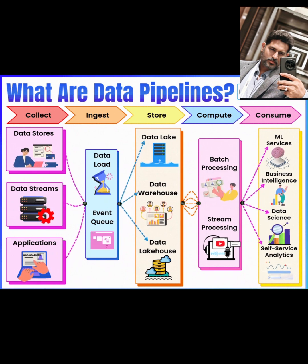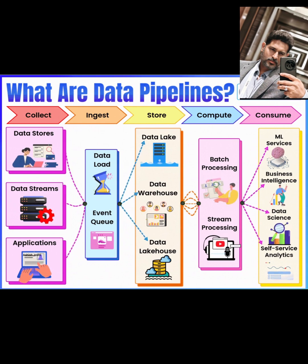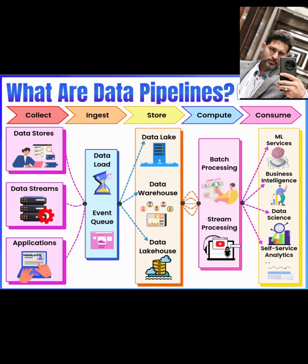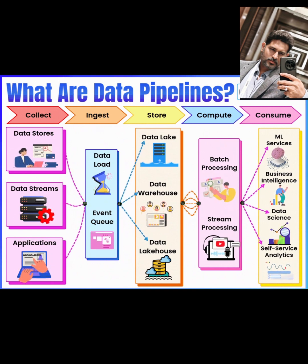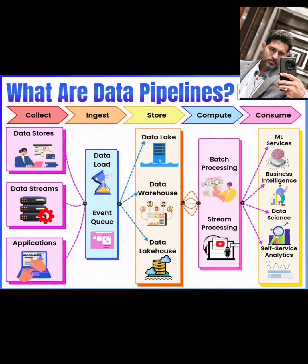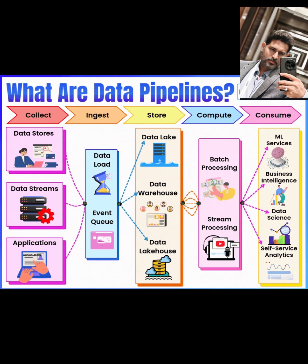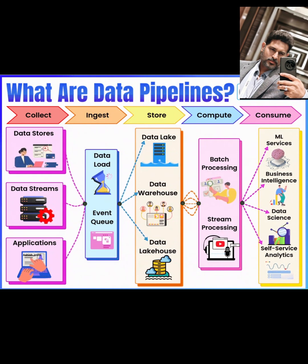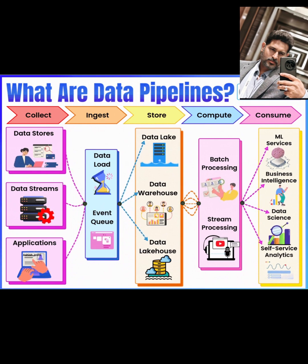Stage one: Collect. The first stage of a data pipeline is collect, where you gather raw data from various sources. These sources can include data stores like relational databases — think MySQL or PostgreSQL — where structured data like customer records or transaction logs live. You also have data streams such as real-time event streams from IoT devices or clickstream data from web servers, often captured using protocols like MQTT or WebSockets.